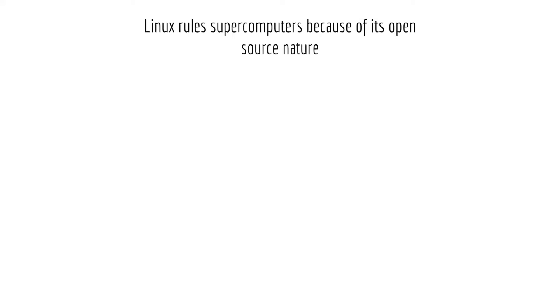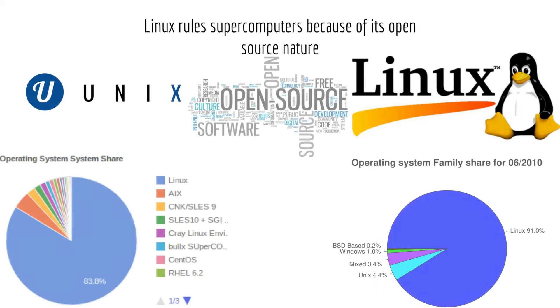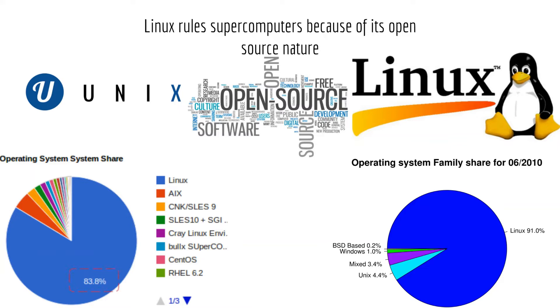Operating system. Most supercomputers run Linux and Unix as an operating system because these are extremely flexible, stable, and cost-efficient operating systems. Currently, Linux covers 83% of the total market share, but in 2010 it was covering 91%. The main reason for this growth is its open-source nature.